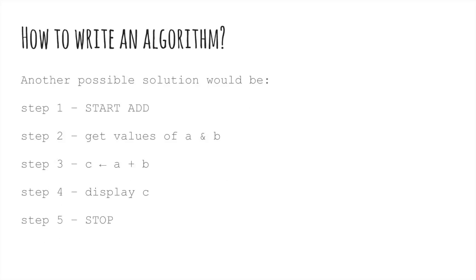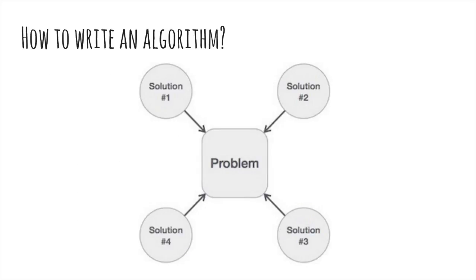In this sense, algorithms tell the programmers how to code the program. Alternatively, the algorithm for the same problem can be written differently. We design an algorithm to get the solution of a given problem. But a problem can be solved in more than one way. Hence, many solution algorithms can be derived for a given problem. Our next step is to analyze those proposed solution algorithms and implement the best suitable one.